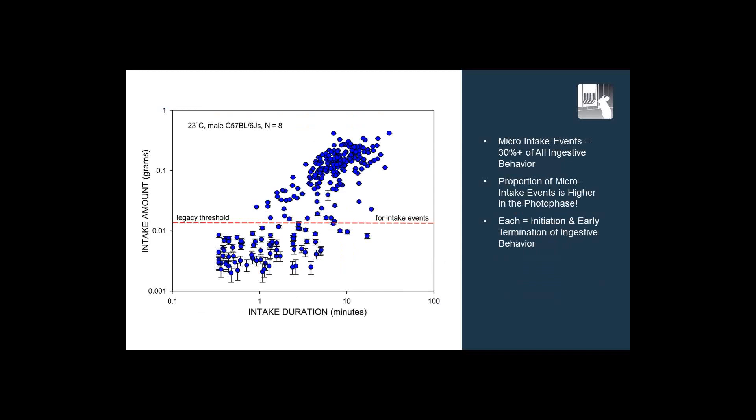To illustrate this, here is intake duration versus intake amount, and you can see there's a very clear relation between them. But the area beneath the red dashed line is just not visible to most systems. The Promethion system has been designed to set the standard for very fine mass resolution. The micro intake events that occur below that line actually account for roughly 30% of all ingestive behavior, and the proportion of those events is actually higher in the photo phase than the scotopic phase. Each of these does not indicate a very large significant food intake, but they do indicate the initiation and then the early termination of ingestive behavior — so they're particularly interesting.